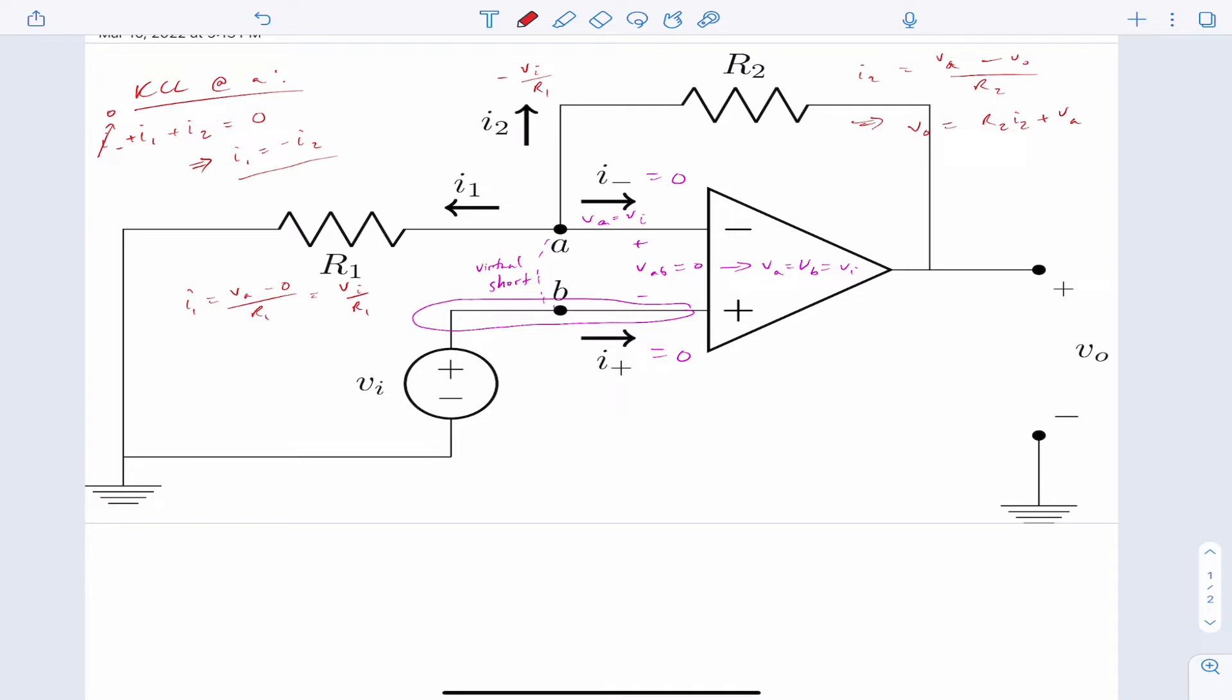So now we know VA is VN or VI. So we'll put in VI. And then we already know I2, I2 should be negative VI over R1, and then we multiply by R2.